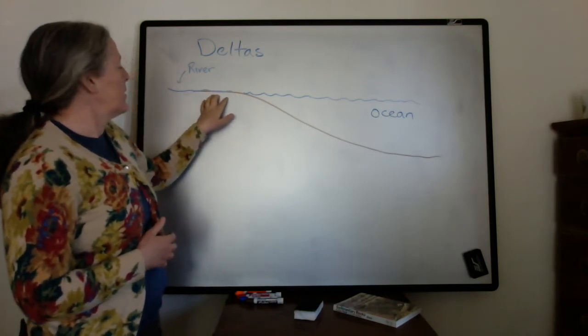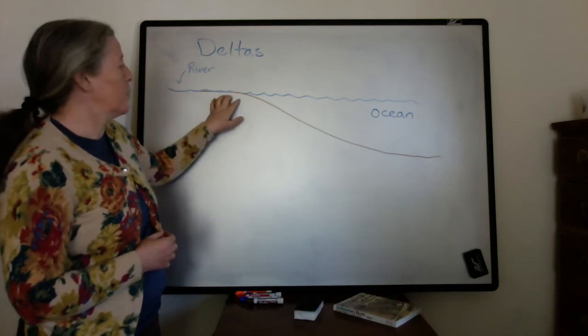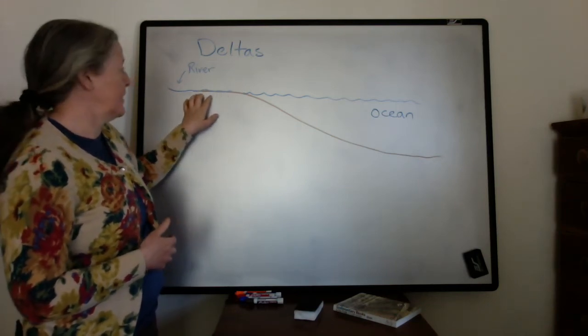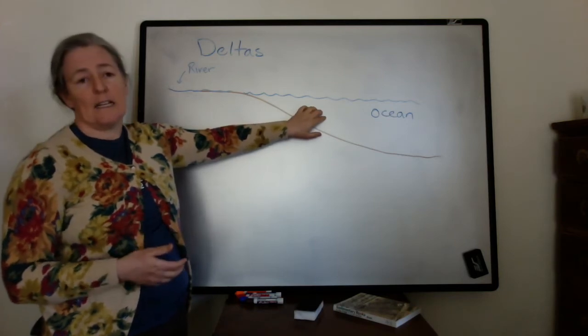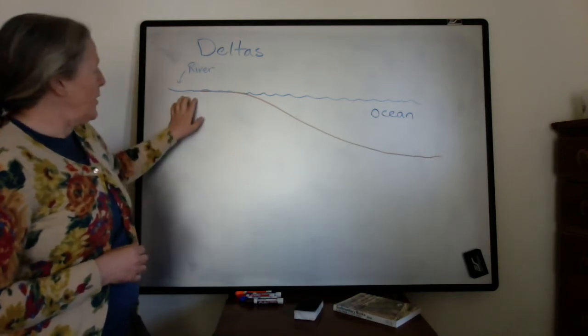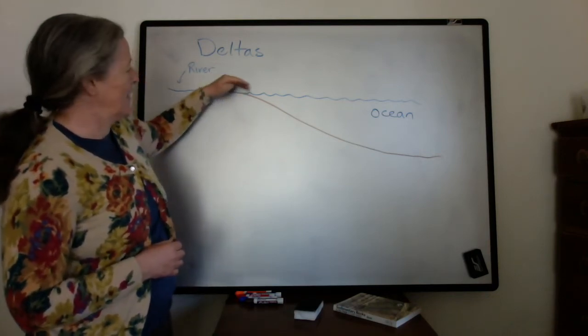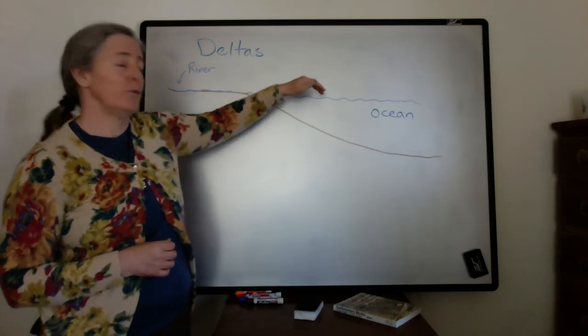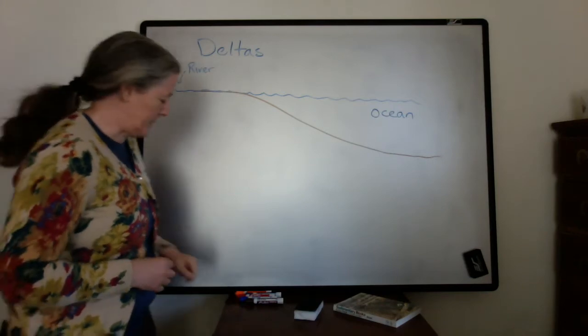The geometry of that deposition is controlled by the amount of sediment in the river and the sediment transport processes in the ocean that they're flowing into. When there's enough sediment in the river to cause the shoreline to migrate into the ocean or lake through time, that's when you tend to form a delta.